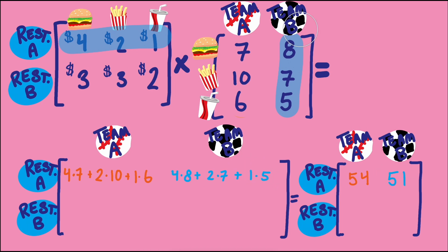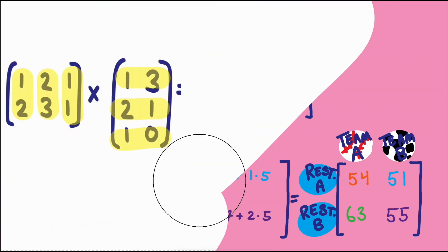We can do that same thing with the other combinations: restaurant B with team A, restaurant A with team B, restaurant B with team B. We know all the combinations of rows and columns are needed and we know where to put the total in the matrix on the right hand side.